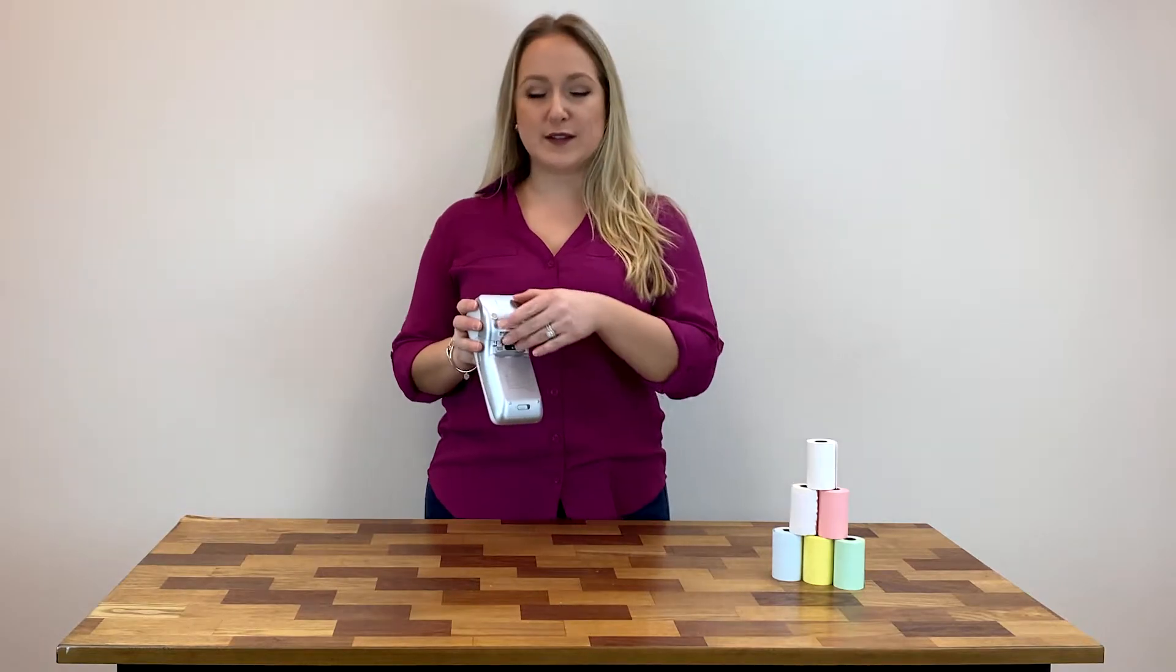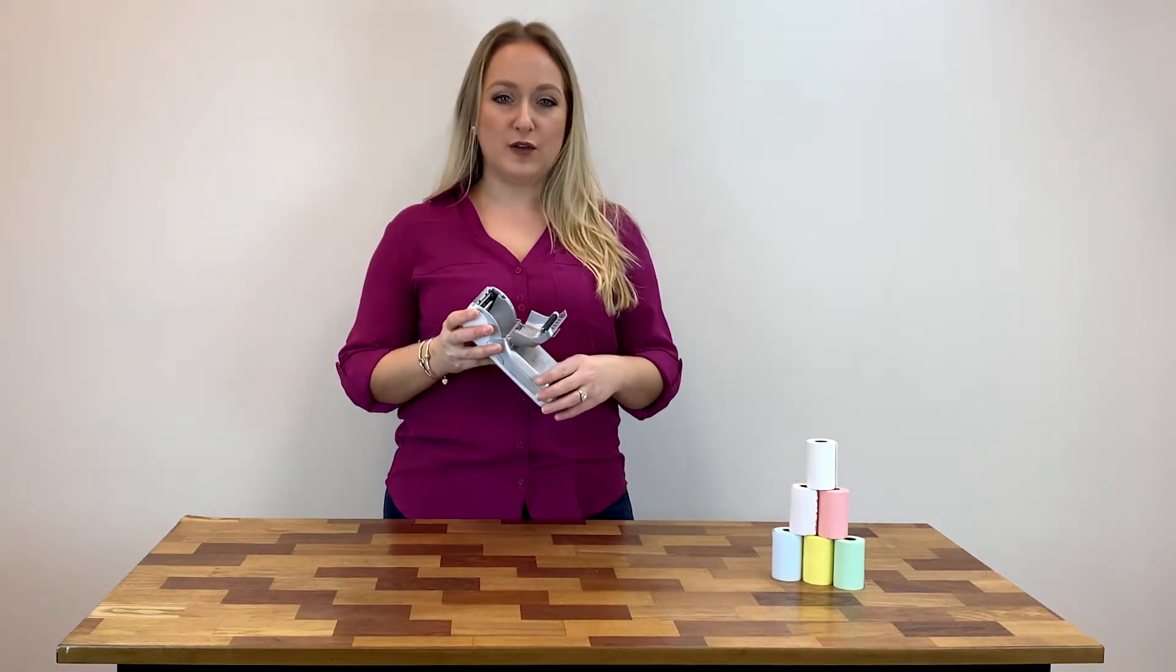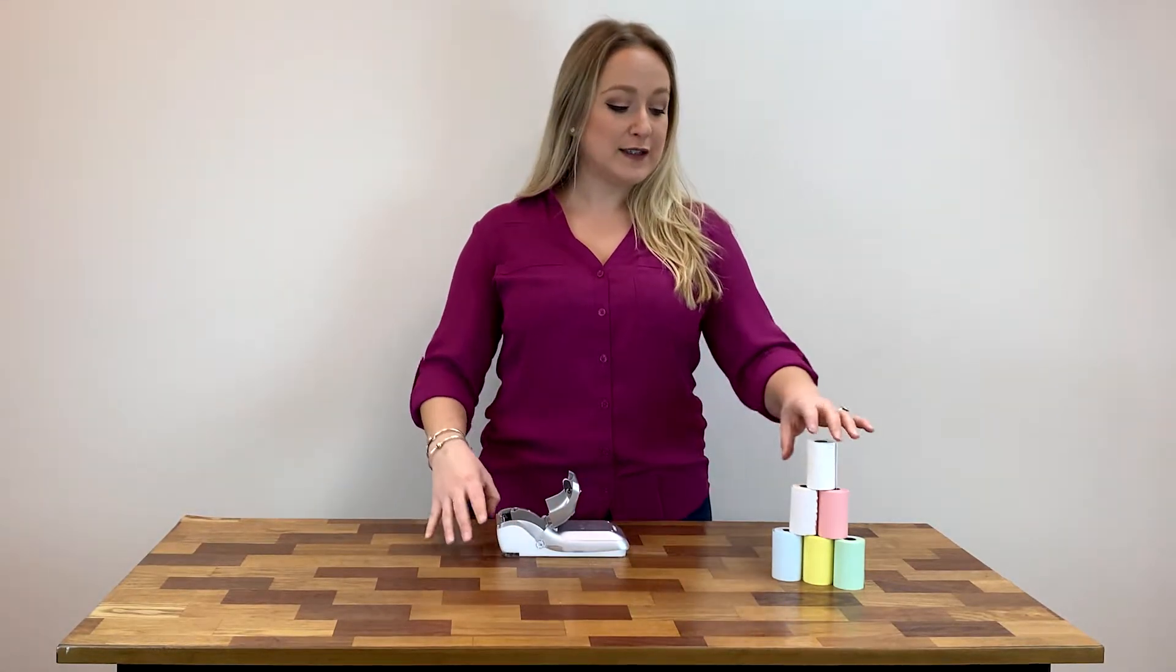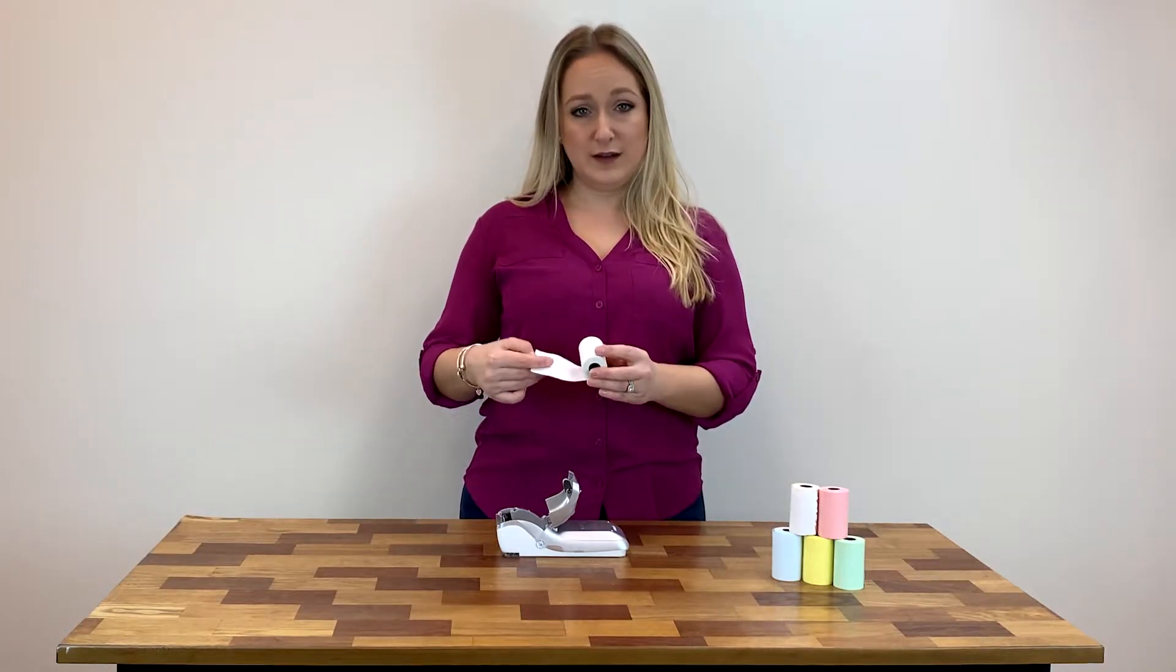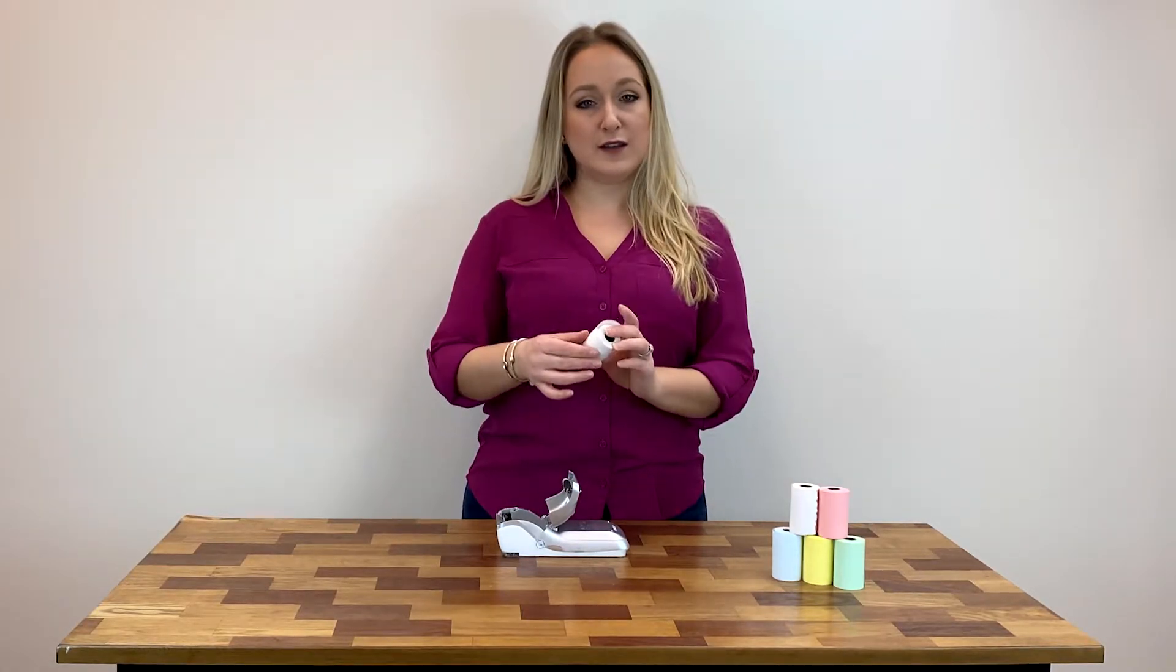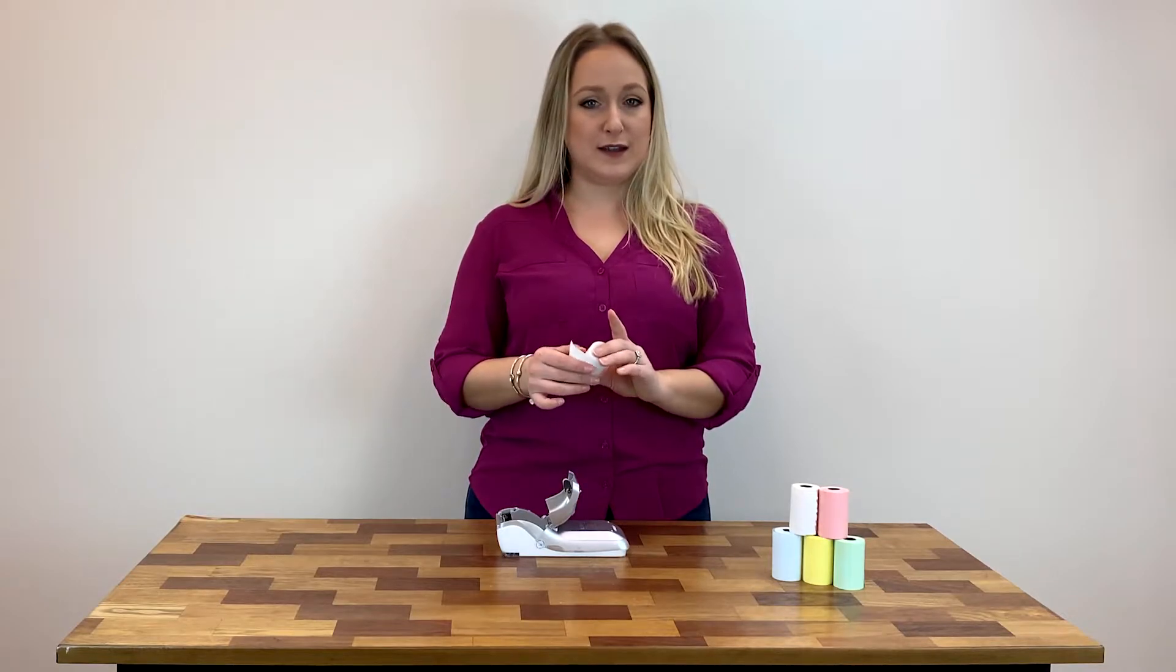Simply turn it over and pull this to open the hatch and drop in your new roll. But you want to make sure that you place it with the paper feeding under and not over. That's because underneath is where the thermal side is and that's the side that's going to image.